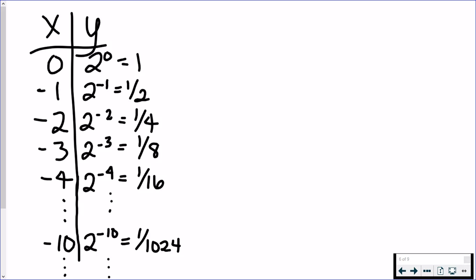So, they're getting closer and closer to 0 without ever actually equaling 0. Again, plug in negative 10. I skipped a few numbers. 2 to the negative 10 is 1 over 1,024.